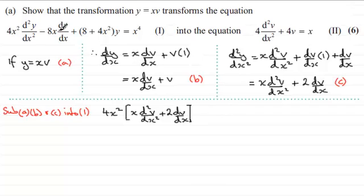And then we've got minus 8x times dy dx. And dy dx is what we have here. So that will be x dv dx plus v. And then we've got plus 8 plus 4x squared times y. Y we know is xv. And it equals x to the power 4.